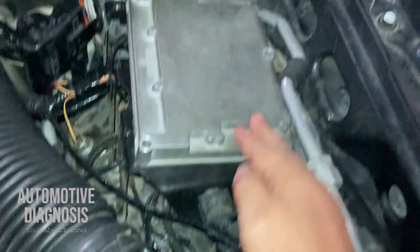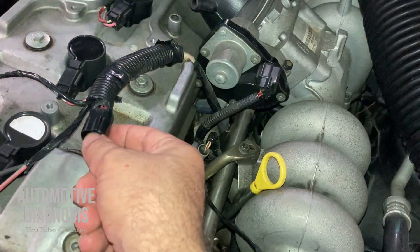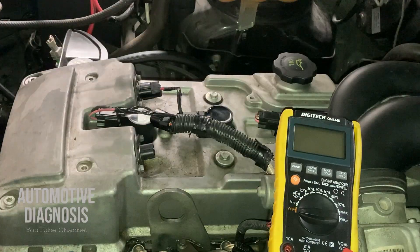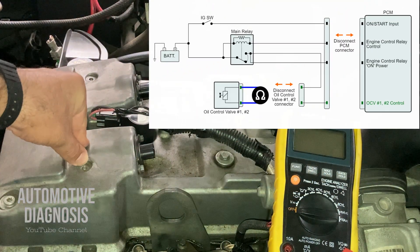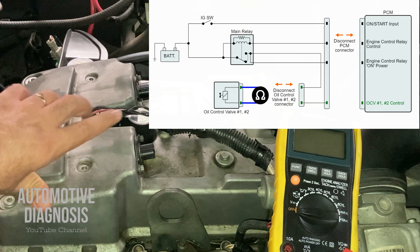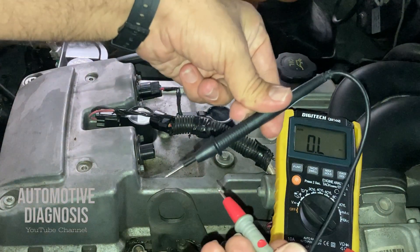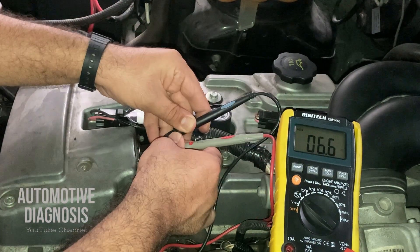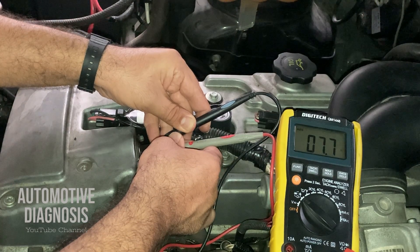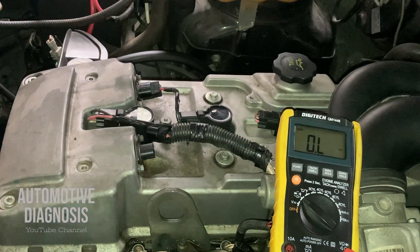The other wire on the VVT solenoid valve is the control line, which goes all the way to the engine control module. You can test that one by checking the continuity or resistance between the control line on the VVT solenoid valve side and the ECM side to make sure the wire is okay. Right after that, you can test the internal resistance of the VVT solenoid valve. Set the multimeter on resistance and measure the resistance across the two pins on the VVT solenoid valve.